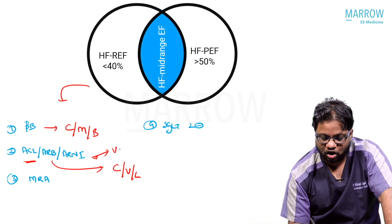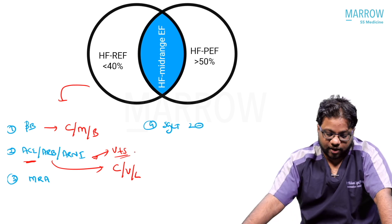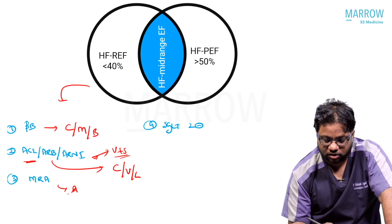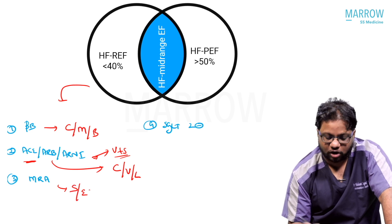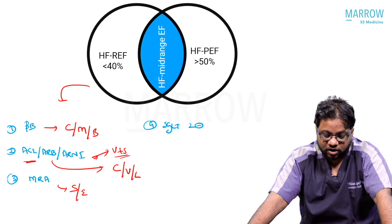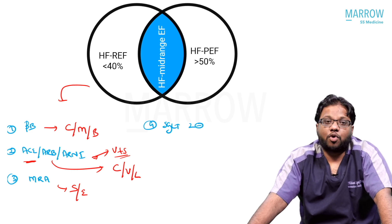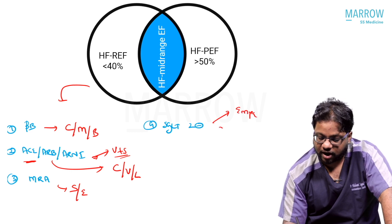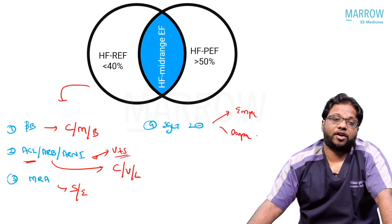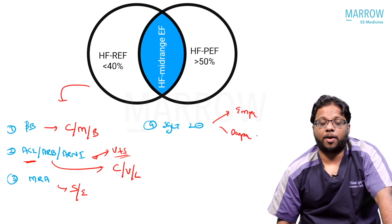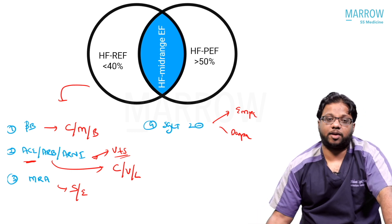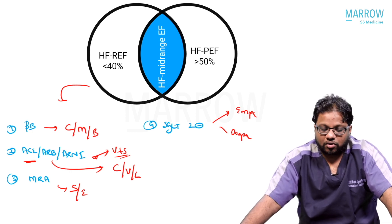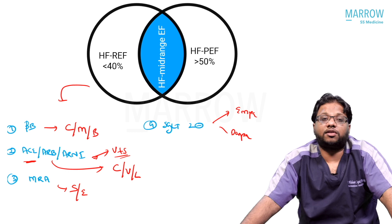There is only one ARNI approved: sacubitril combined with valsartan. The MRAs are spironolactone and eplerenone — eplerenone being a selective receptor antagonist. For SGLT2 inhibitors, the AHA 2022 approves empagliflozin 10 mg OD and dapagliflozin 10 mg OD.